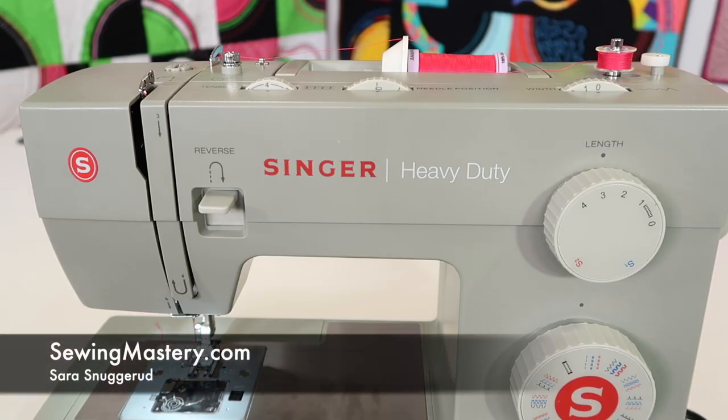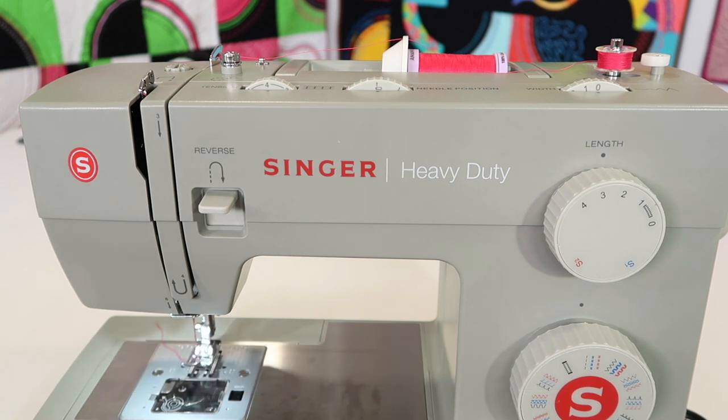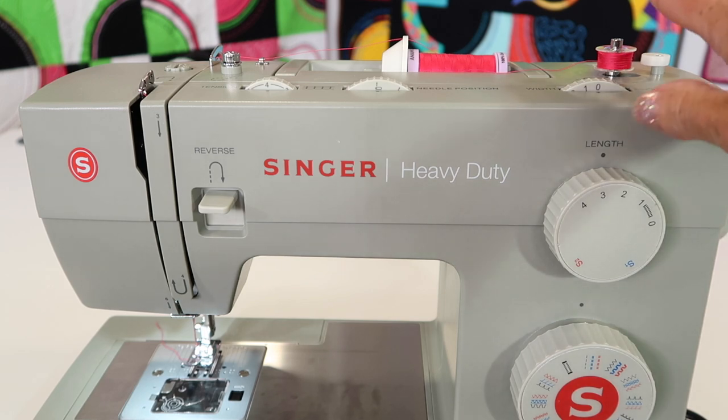A sewing machine works best when all the parts and pieces are correctly threaded and inserted. Let's talk about inserting the bobbin into the Singer Heavy Duty 4452 sewing machine correctly. We're actually going to start up top.